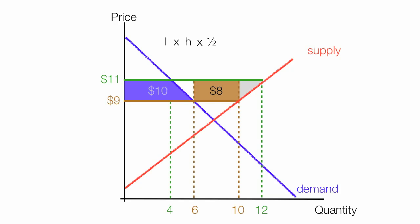Now we calculate the area of the deadweight loss triangles. The height is $2, so it's 2 times 2 (the height) times 1 half, which equals $2. That's the area of that deadweight loss triangle.